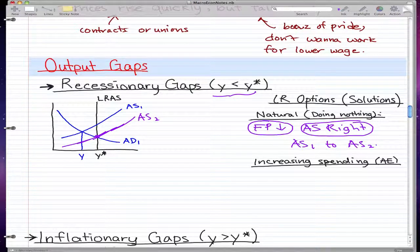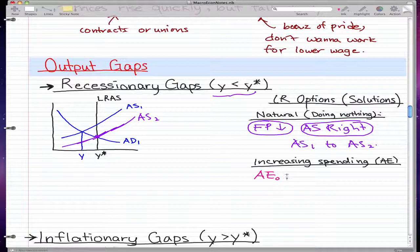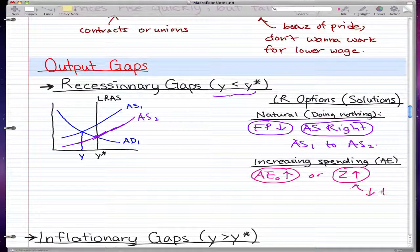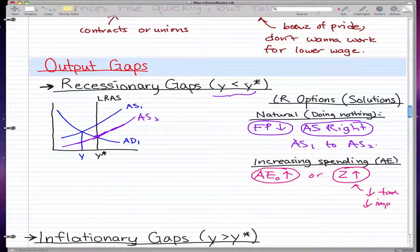The second option we have is by increasing spending, and increasing spending generally means increasing our autonomous expenditure or increasing our Z, which is the marginal propensity to spend. Two ways to increase Z is by decreasing taxes or decreasing imports.